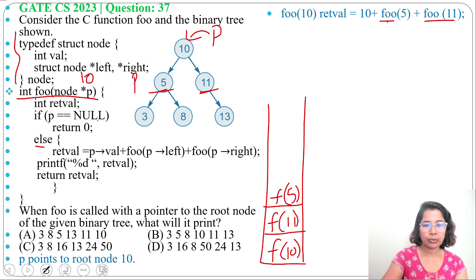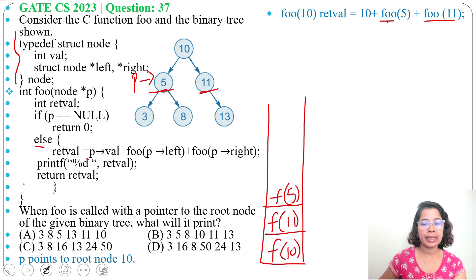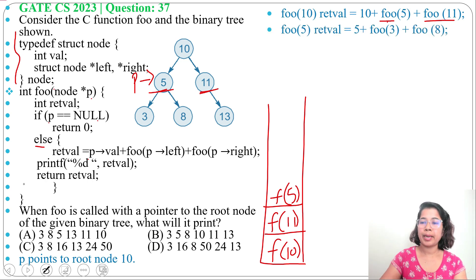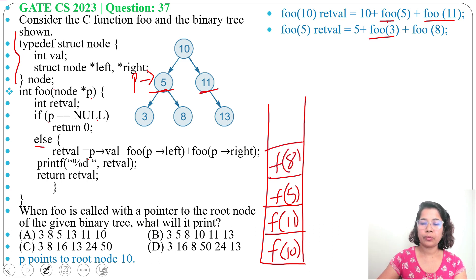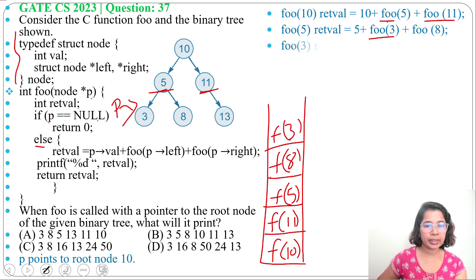In foo(5), p is pointing to 5. 5 is not null, so we execute the else part. Return value will be 5 plus foo(3) plus foo(8) — 3 is the left child and 8 is the right child. We store foo(8) in the stack and call foo(3) first.